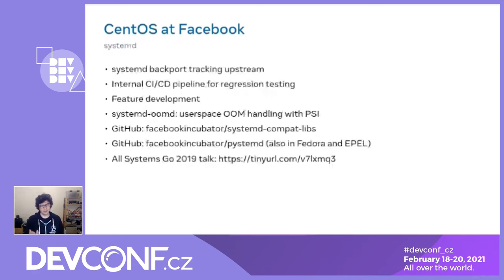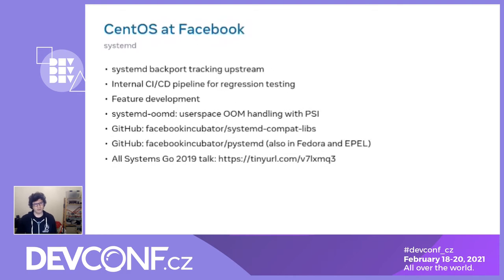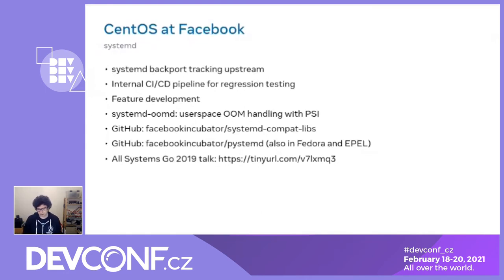Another component we work on extensively is systemd. We follow systemd upstream and maintain a systemd backport available in our repo. We take the latest stable release, add whatever patches we have in development — either already submitted upstream and accepted, or currently in review — and feed it to our CI/CD pipeline, which runs a battery of tests including tests against our container suite. If we find any issues we report them back upstream or fix them directly, then roll it out.